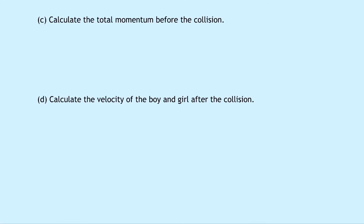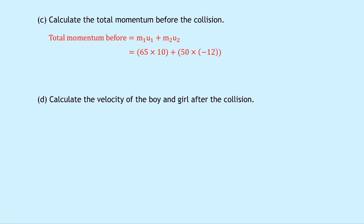Part c asks to calculate the total momentum before the collision. Total momentum before = m1·u1 + m2·u2 = 65 × 10 + 50 × (−12) = 650 − 600 = 50 kilogram meters per second.